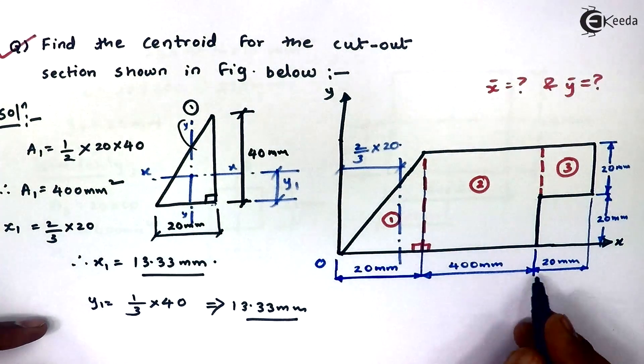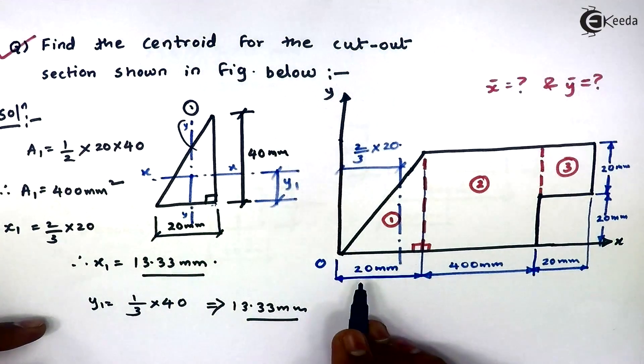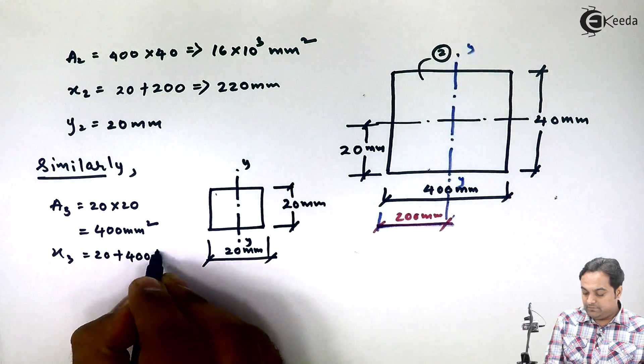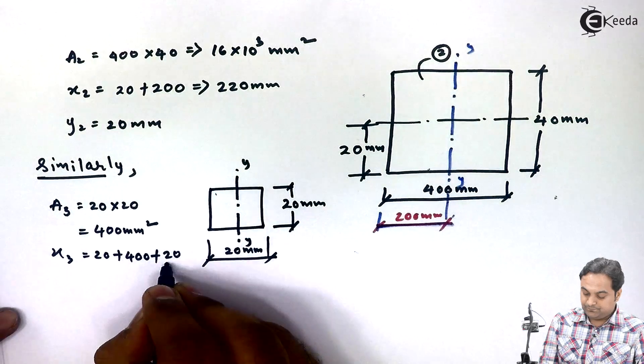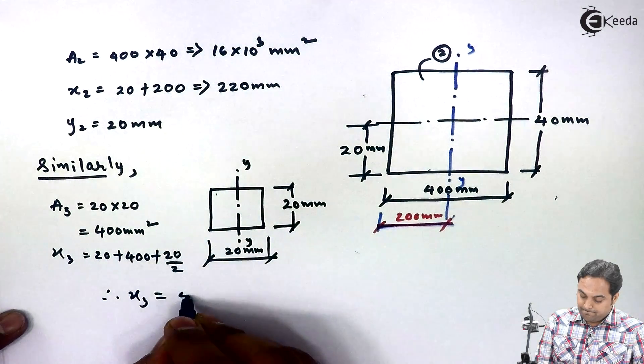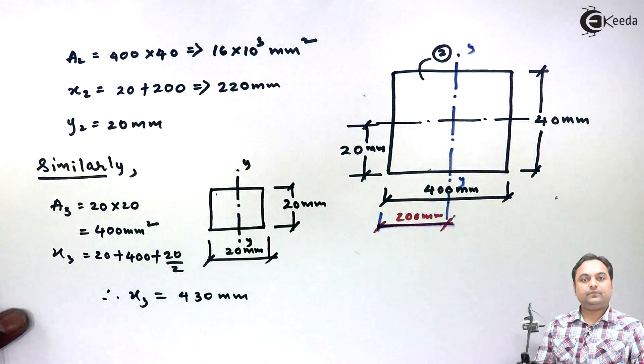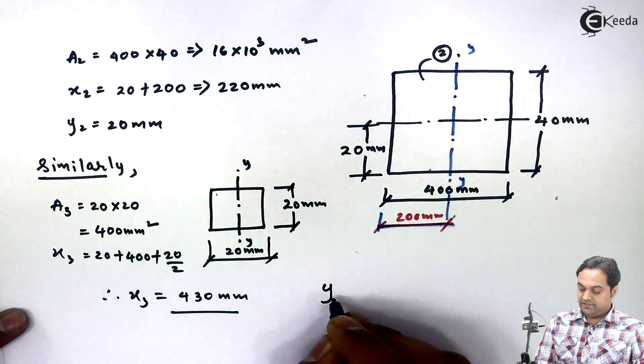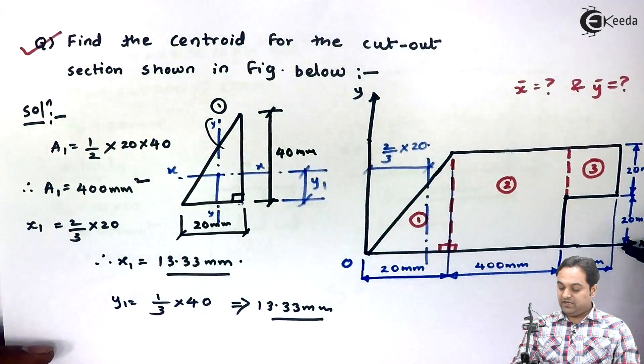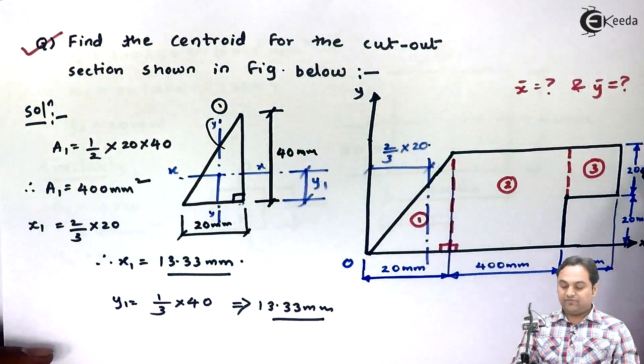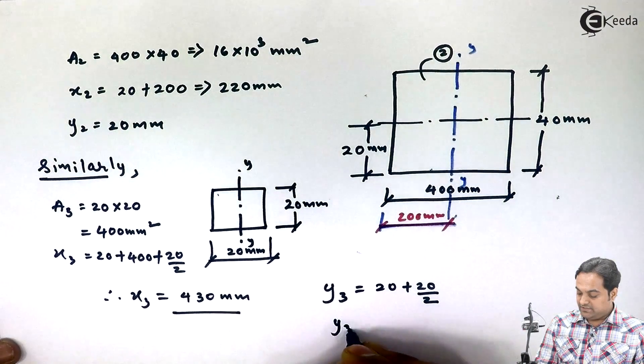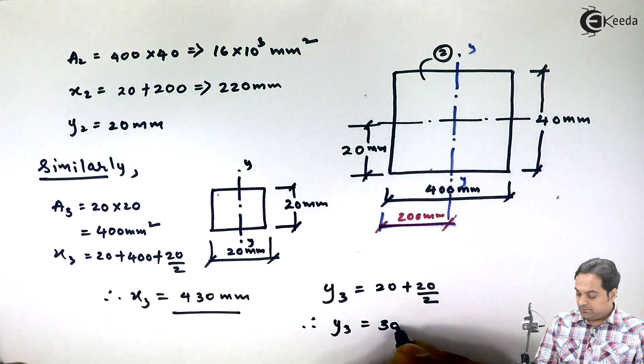And we are measuring the distance from origin. For figure 3, it is starting after 20 plus 400, so it is 20 plus 400 plus half of 20. So x3 equals 430 mm. So y3 is equal to 30 mm.